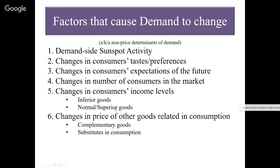Normal and superior goods are grouped together because their demand behaves the same way. When income levels rise, the demand for normal goods shifts right and the demand for superior goods shifts right; they shift left when income levels drop. But normal goods and superior goods are not the same type of product. A normal good fills a basic need and is desirable to most consumers — like a brand new Honda Civic versus a beat-up 20-year-old Honda Accord. A superior good is a luxury product — a brand new Acura or Cadillac Escalade. If income levels drop, demand for inferior goods shifts right while demand for normal or superior goods shifts left, and vice versa.